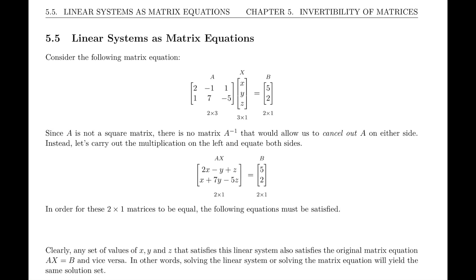We've learned how to solve matrix equations by multiplying both sides by the inverse when it exists. But you notice that in this case, it is not a square matrix, and so there is no A inverse that would allow us to cancel out A on either side. We cannot solve using x equals A inverse times B because A inverse does not exist.